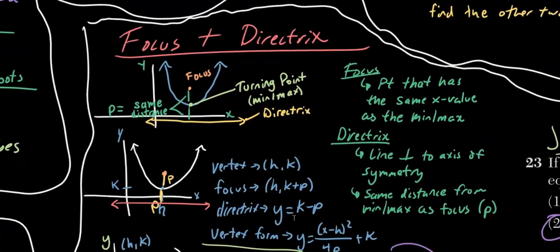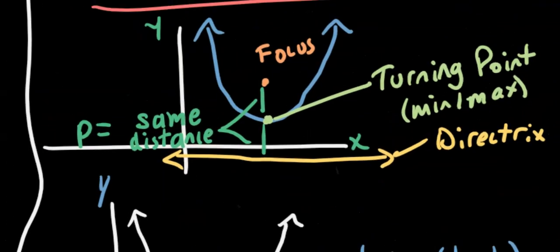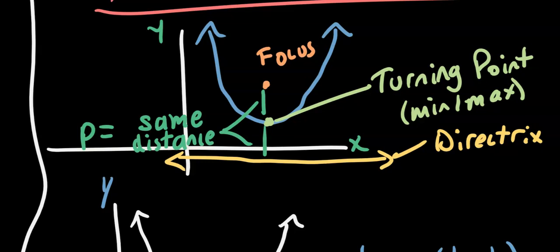And now for focus and directrix. This is on every Regents exam and is usually a two- or four-point question. They are removing it from the curriculum for the 2025–2026 school year, but until then we're stuck with it. The focus of a quadratic is a point on the line of symmetry that is the same distance from the parabola as the directrix line. The distance from the focus to the vertex and from the vertex to the directrix is p, so the total distance from focus to directrix through the vertex is 2p.